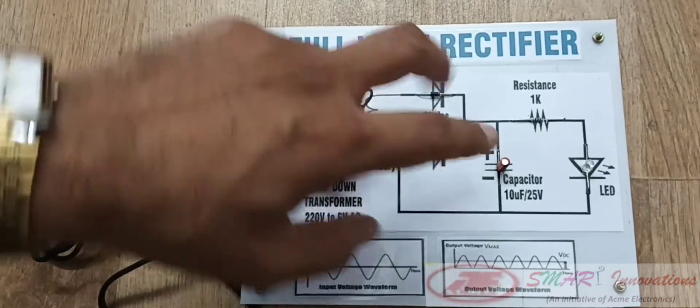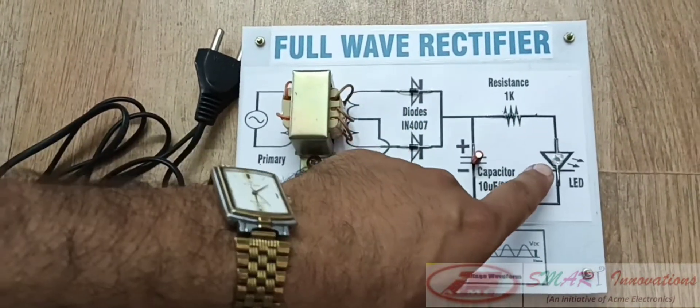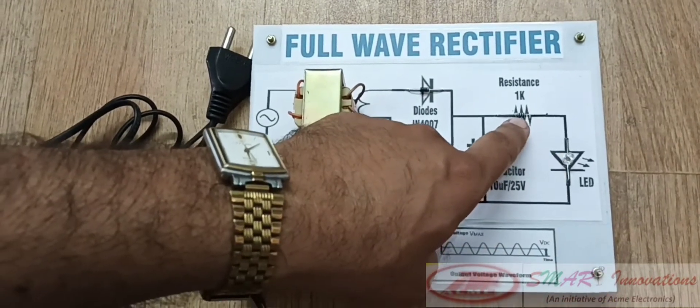This is a filter capacitor which removes the ripples, and the current in the LED is limited by this resistance.